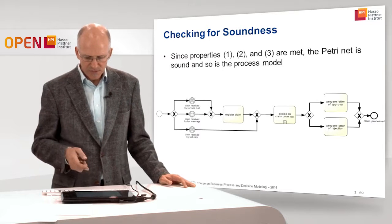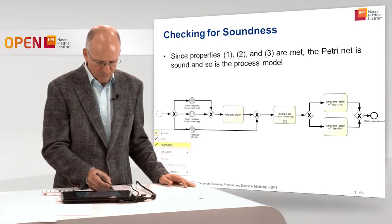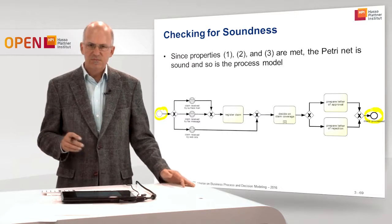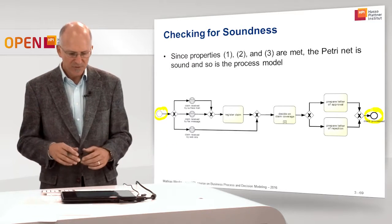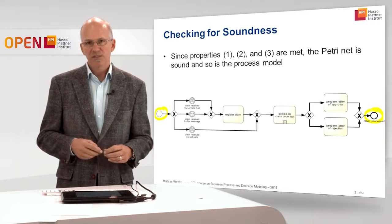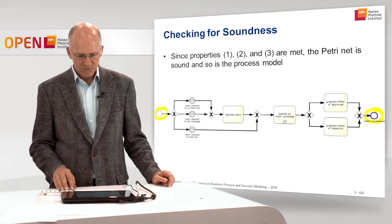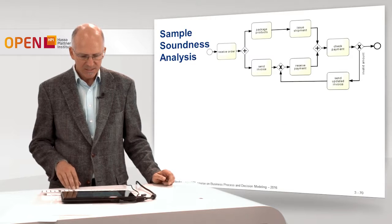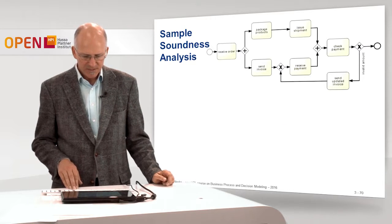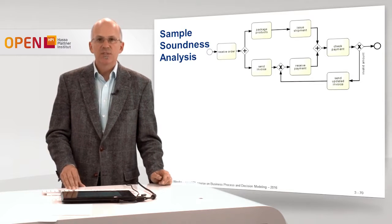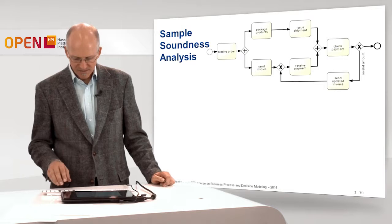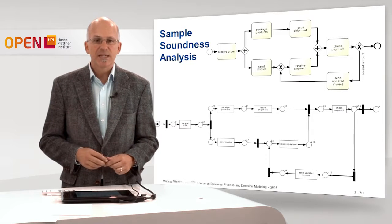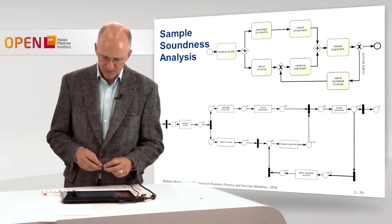It should be clear that once we start the process, we can take any decision and we always end up at the final state. The Petri Nets are very useful for this formal analysis. The second example I'd like to briefly discuss is the one where we spotted incorrect behavior. We mapped this BPMN diagram to a Petri Net and ended up with this Petri Net structure.